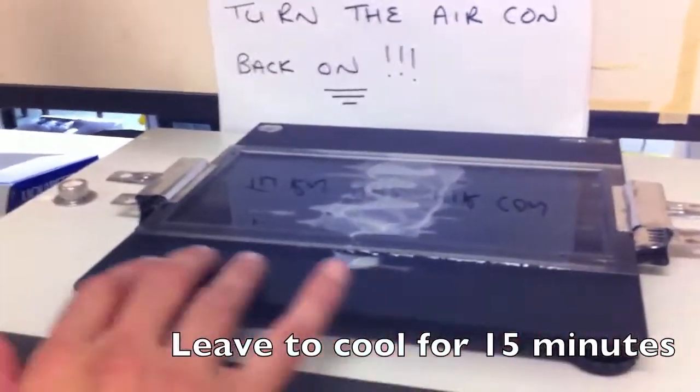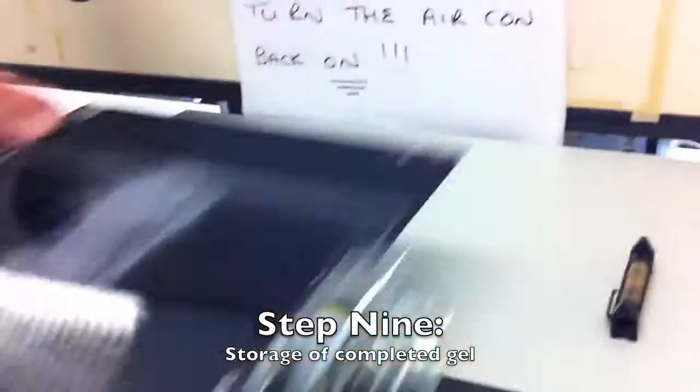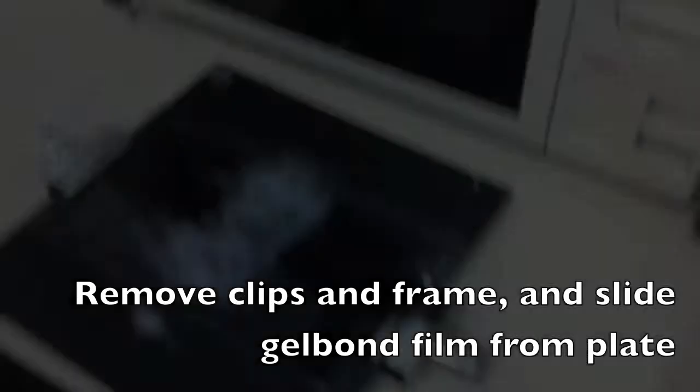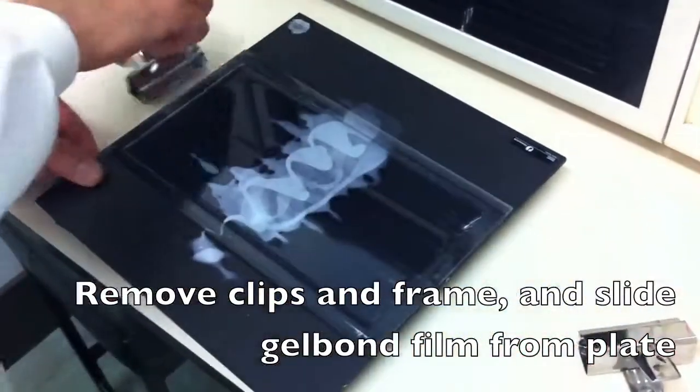Leave to cool for 15 minutes to ensure the gel will settle properly and evenly. The final step involves storage of the gel. Carefully remove the clips and the frame and slide the gel bond film from the plate with the gel on top of it.